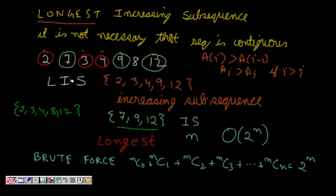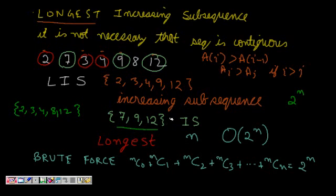I want the longest increasing subsequence. How do we solve it? One way is to find all subsets of the set. If I have n elements, I will have 2 to the power of n subsets. I look at which are increasing subsets and find the one with maximum length. But the order is exponential — O(2^n) — which is not acceptable.